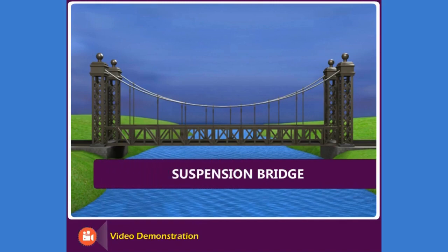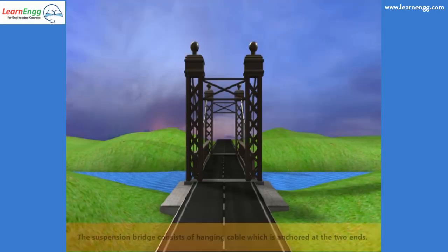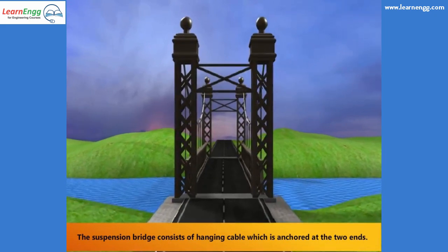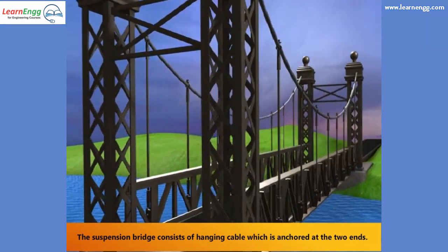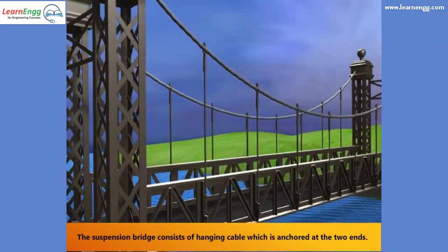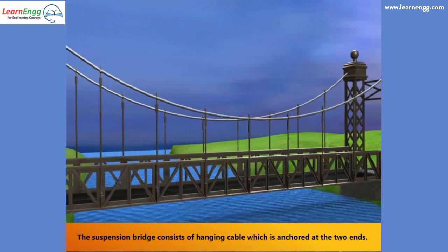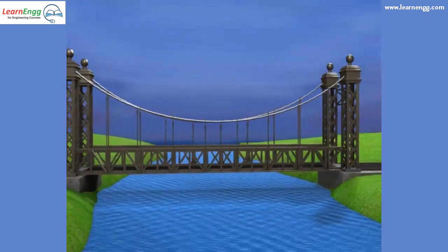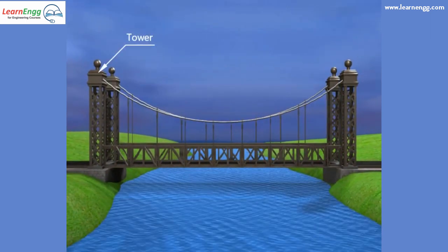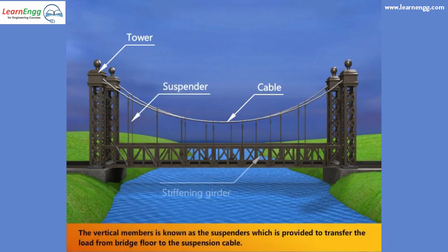Suspension Bridge. Let us see the structure of the suspension bridge. The suspension bridge consists of a hanging cable which is anchored at the two ends. The vertical members are known as the suspenders, which are provided to transfer the load from the bridge floor to the suspension cable.